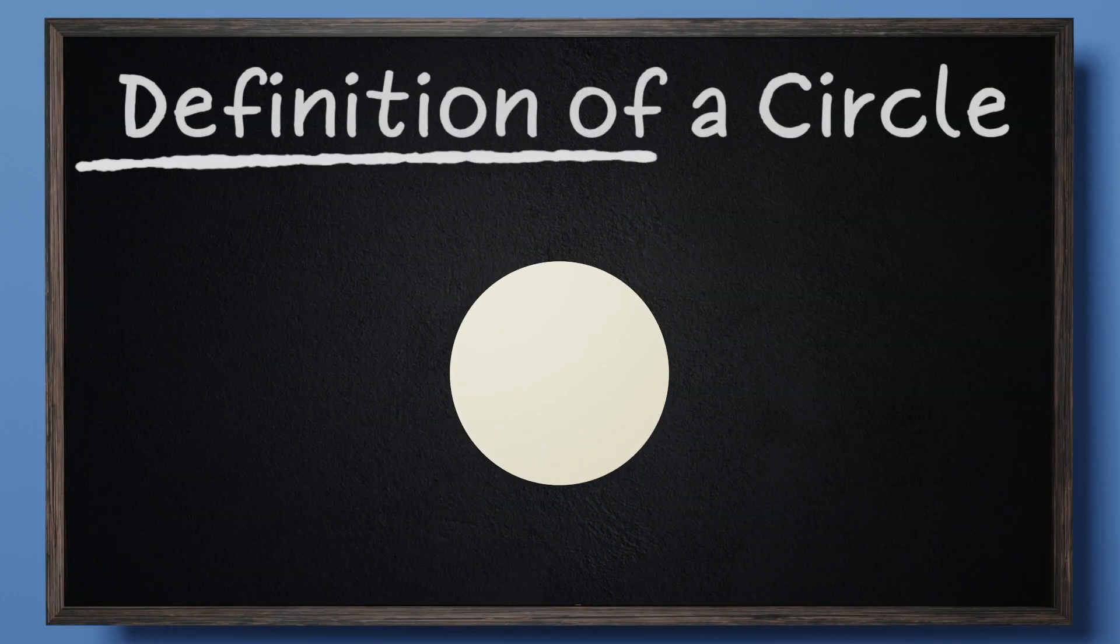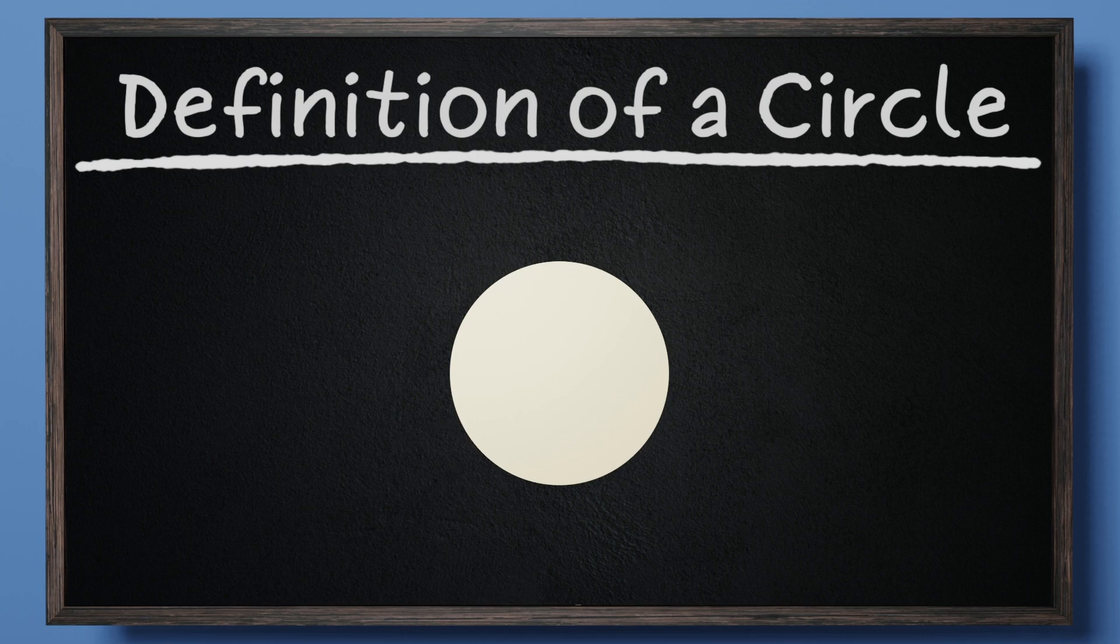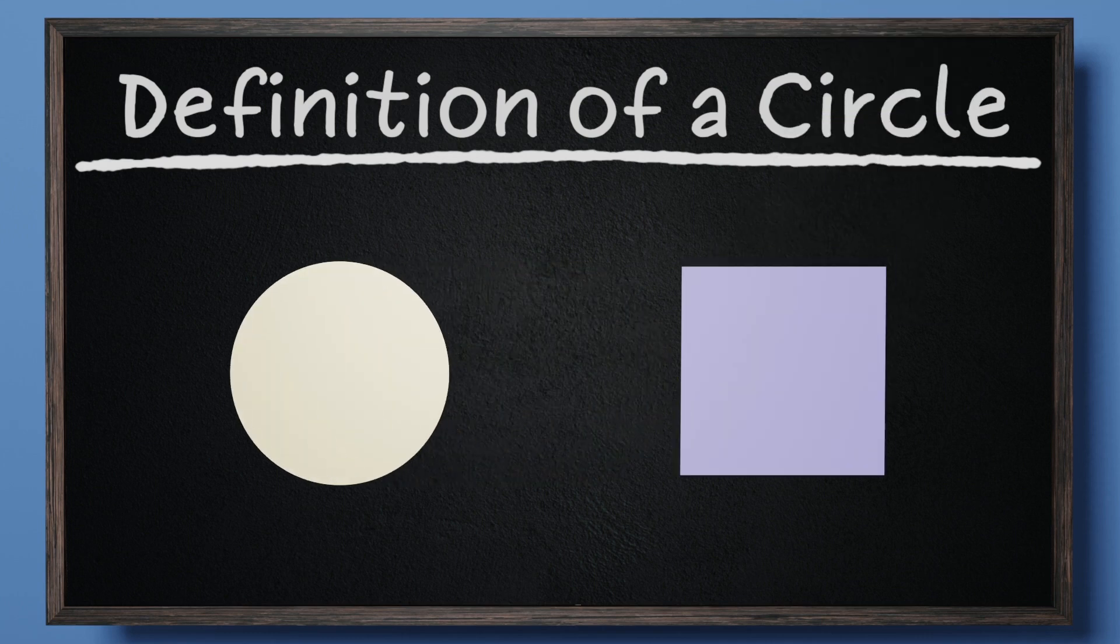Let's begin with how we define a circle. We know circles when we see them, but could you put words together to define what a circle is? Some might say circles are round unlike squares, which have sharp corners. This is correct, but not specific enough.